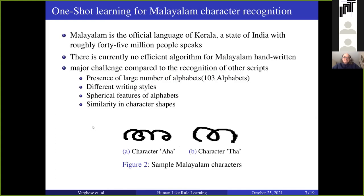We have applied this OSHD concept in two different domains. The first is character recognition, where we adopted a language from India known as Malayalam. The reason for selecting this language is that we don't have any efficient algorithm for Malayalam handwritten character recognition, because of its large number of alphabets, different writing styles, different structures, and similarity in shapes. As you can see here, these are two different alphabets but considering the structure, it may be predicted that they are the same.